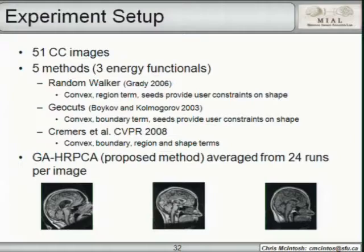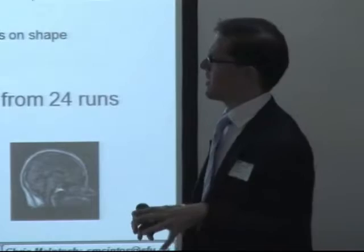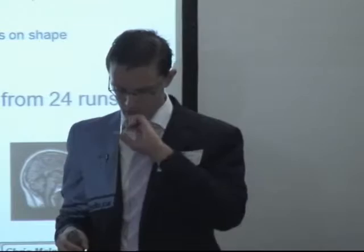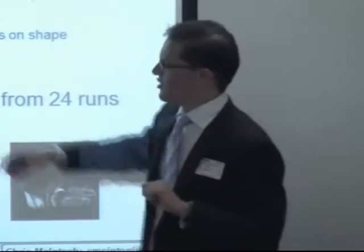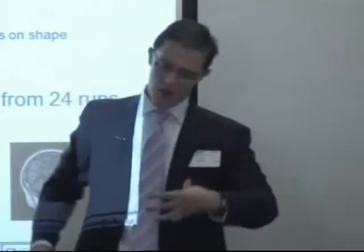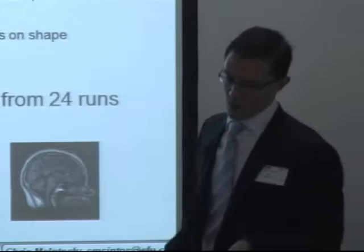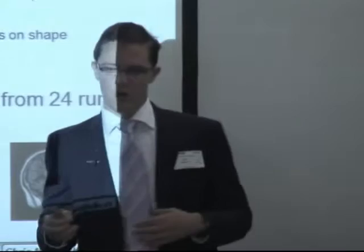The experimental setup uses 51 corpus callosum images evaluated across five methods covering three energy functionals: Random Walker (convex region-based, semi-interactive with seeds by Leo Grady), Geocuts (convex boundary-based, semi-interactive by Boykov and Kolmogorov), Kremers et al. CVPR 2008 (convex with boundary, region, and shape terms), and our proposed genetic algorithm HRPCA method, averaged across 24 runs per image given the randomized nature of genetic algorithms.